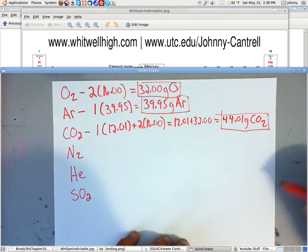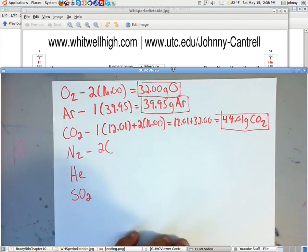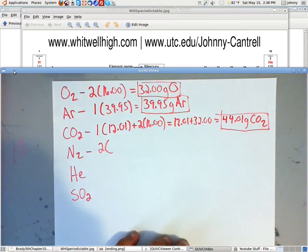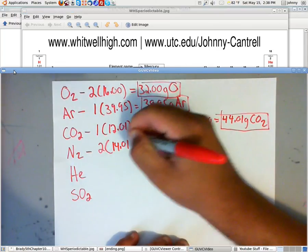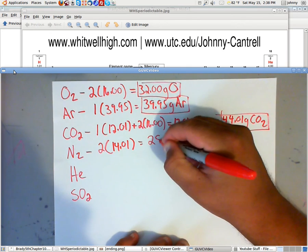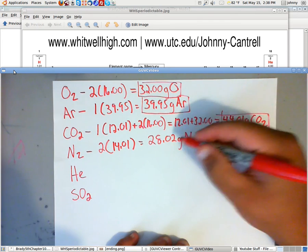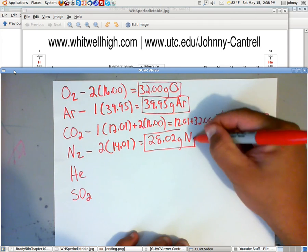Now, the nitrogen, we've got two of those. If you look up the nitrogen, notice that we've got 14.01 of those. So that's 14.01 of those as far as grams. So basically, that's going to be 28.02 grams of nitrogen. All right.